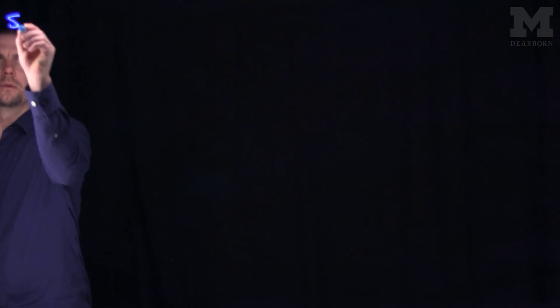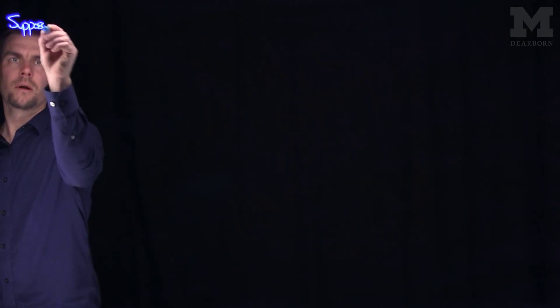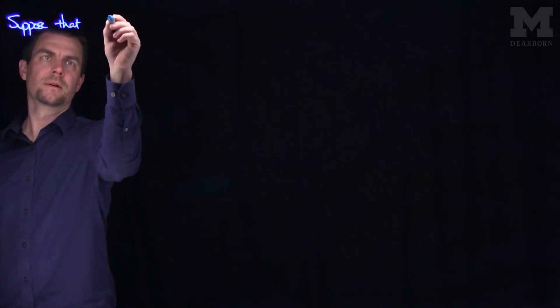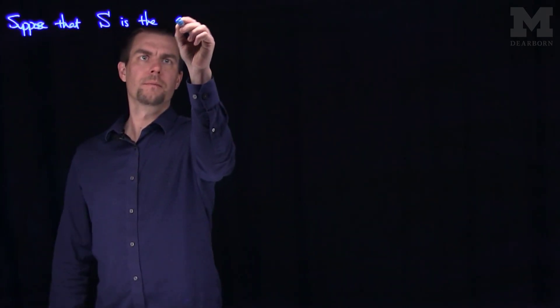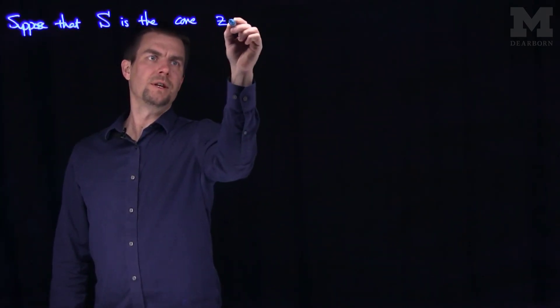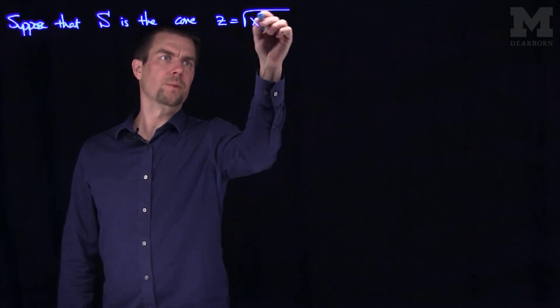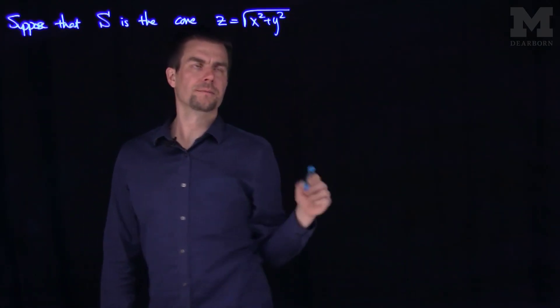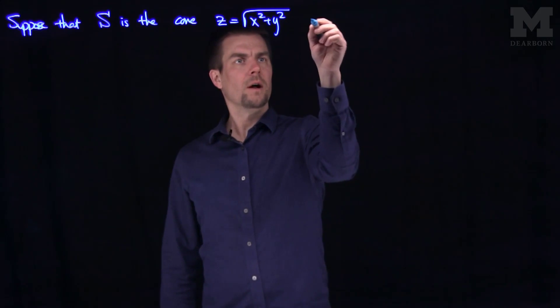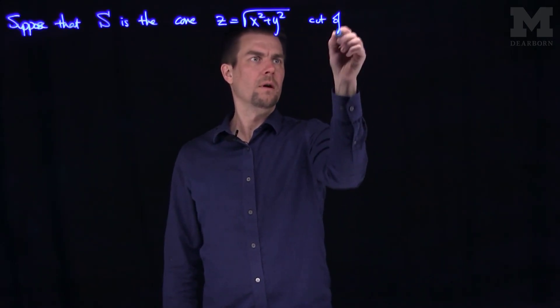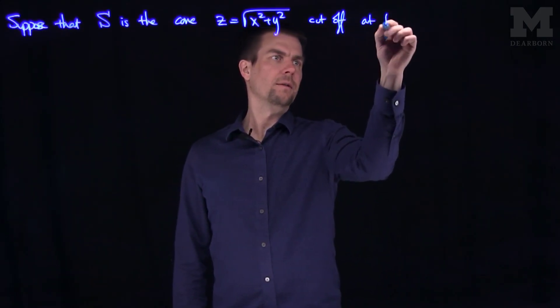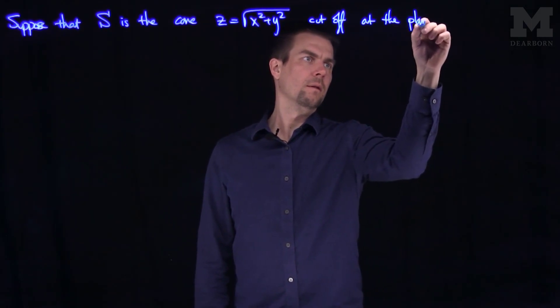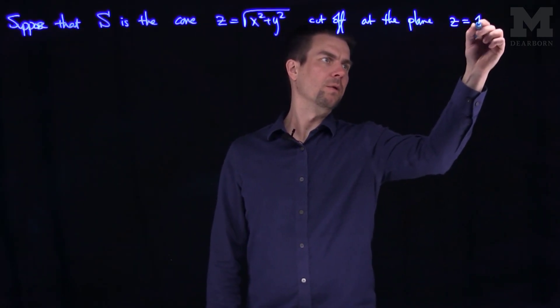Hello students. In this video we'll see another example of using Stokes' Theorem. Let's suppose that S is the cone z equals the square root of x squared plus y squared, cut off at the plane z equals 1.